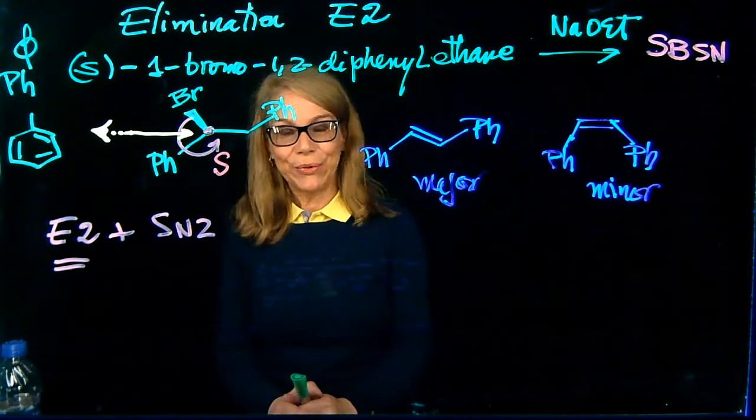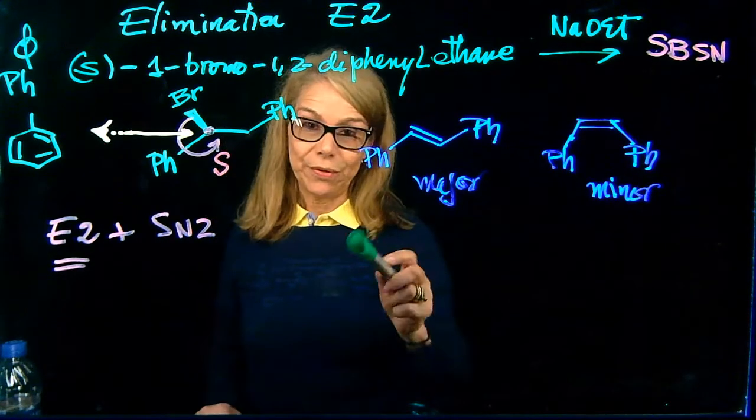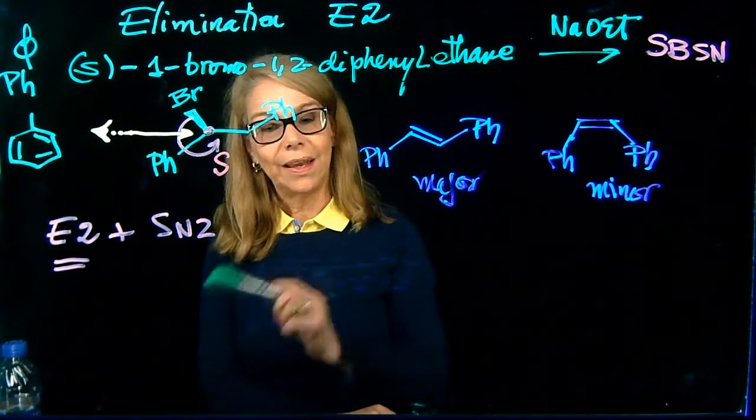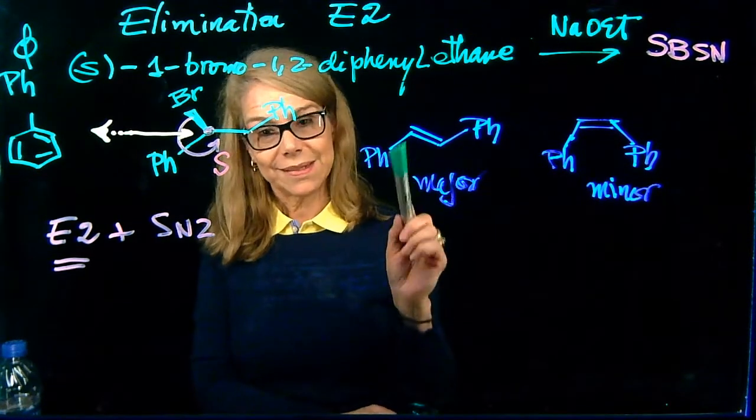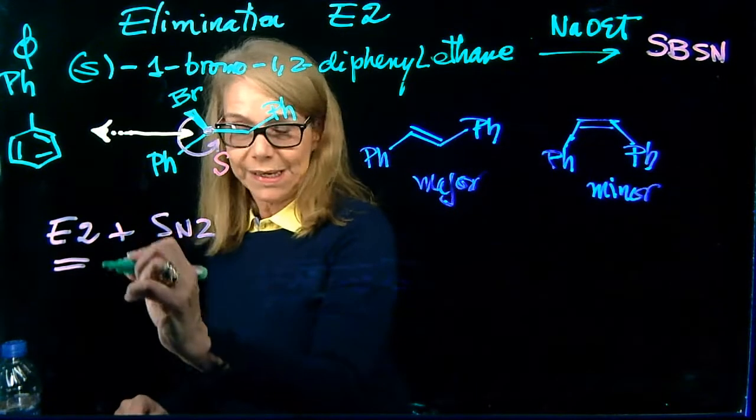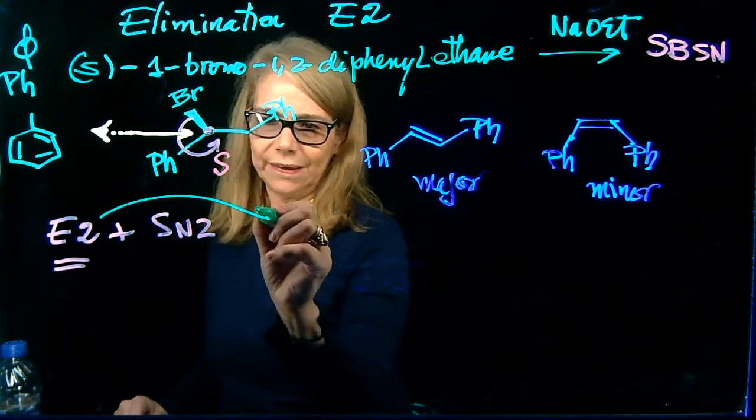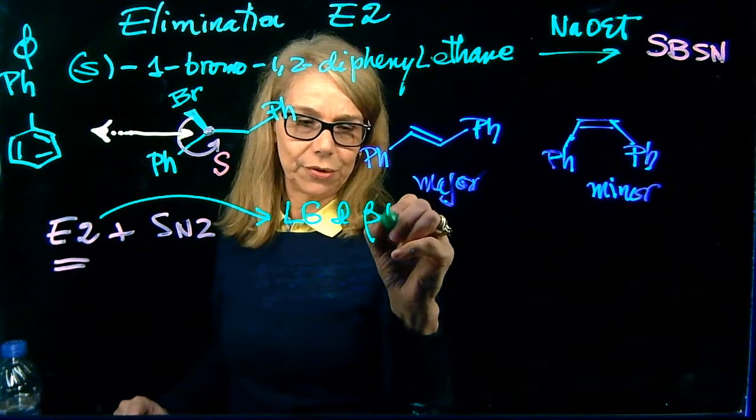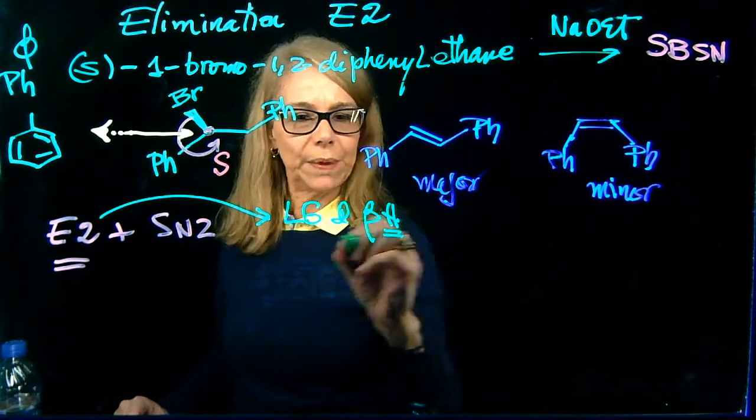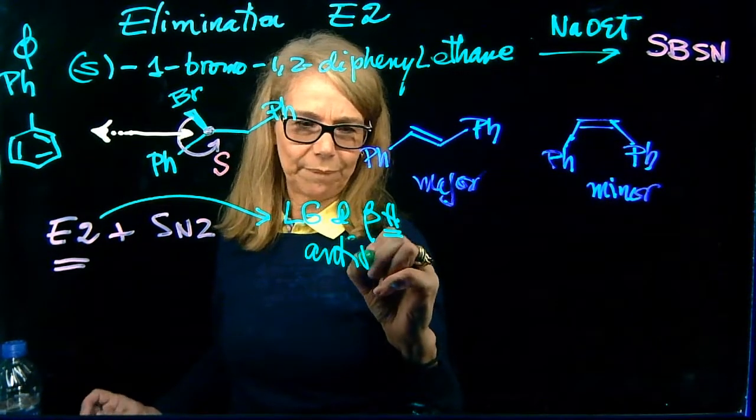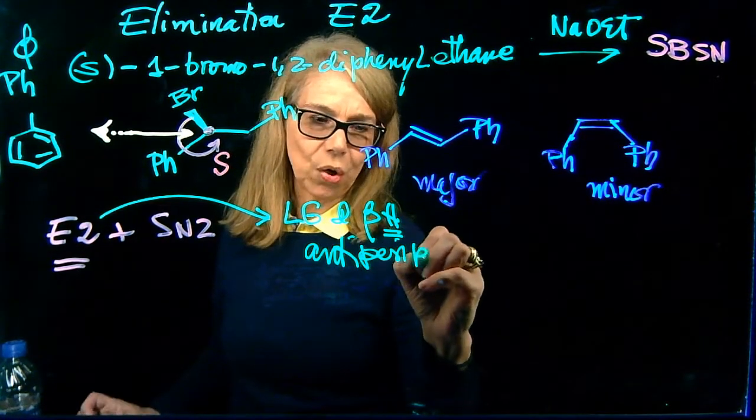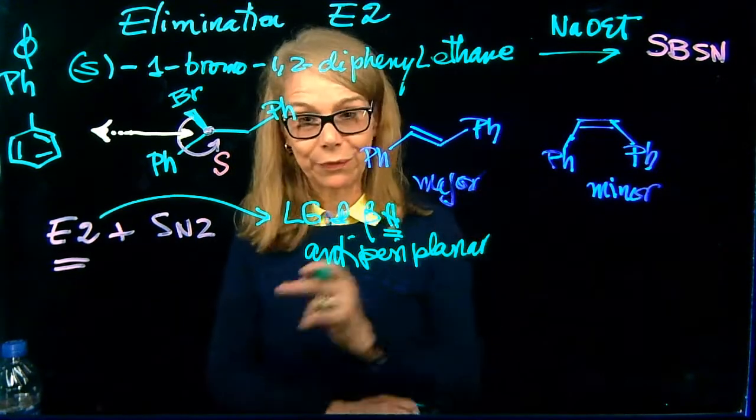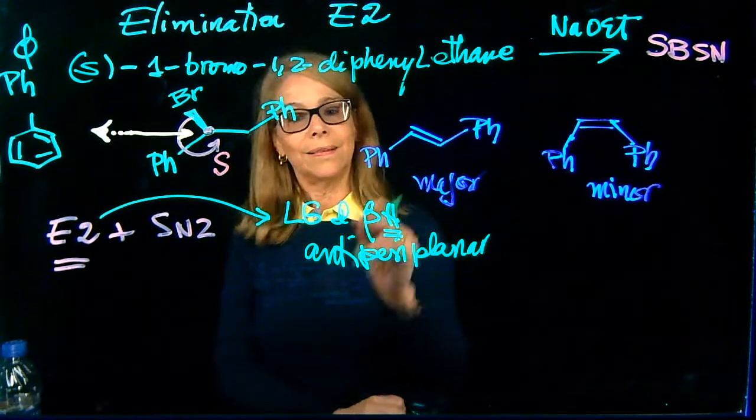Let's continue doing this problem. In a previous video, we explained the formation of this product and how it was a major product because essentially, the requirement for the E2 reaction is that we have the leaving group and the beta-hydrogen, and it needs to be anti-periplanar. And in doing so,